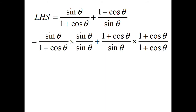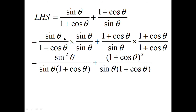After doing that, the first fraction is multiplied by sine theta — the denominator of the second fraction — and the second fraction is multiplied by 1 plus cos theta — the denominator of the first fraction. Sine theta times sine theta gives sine squared theta, and 1 plus cos theta times 1 plus cos theta gives (1 plus cos theta) whole squared. The denominator for both fractions is sine theta times (1 plus cos theta), kept together.